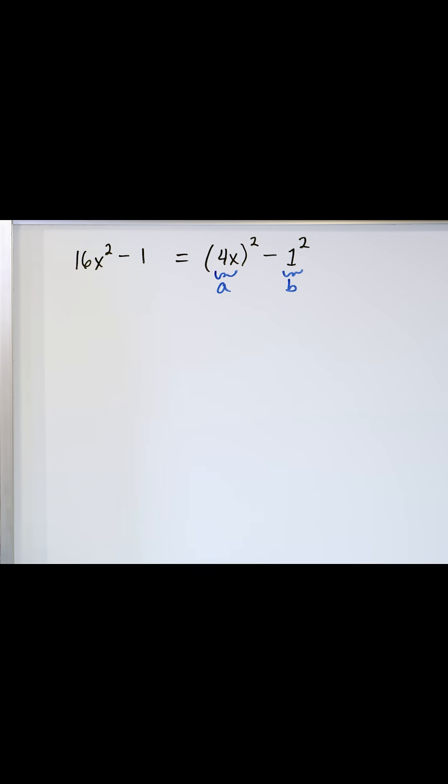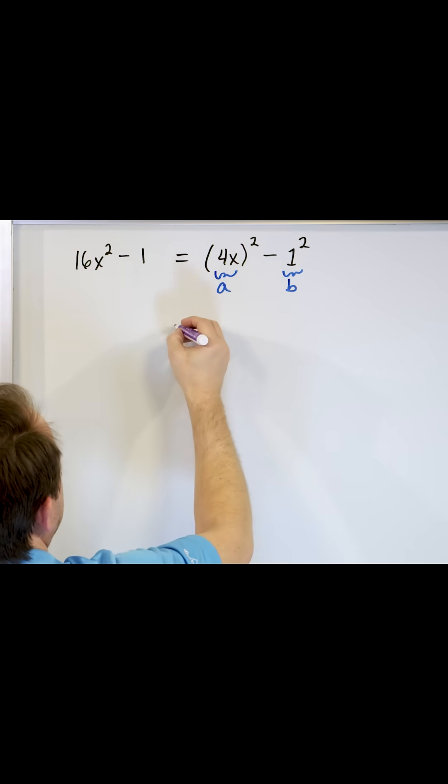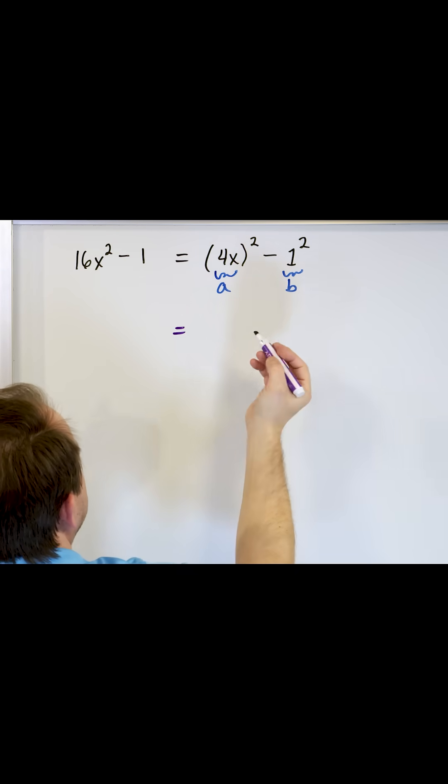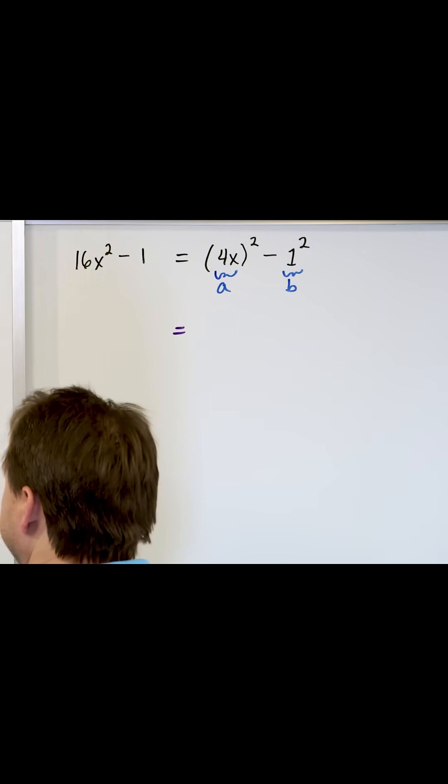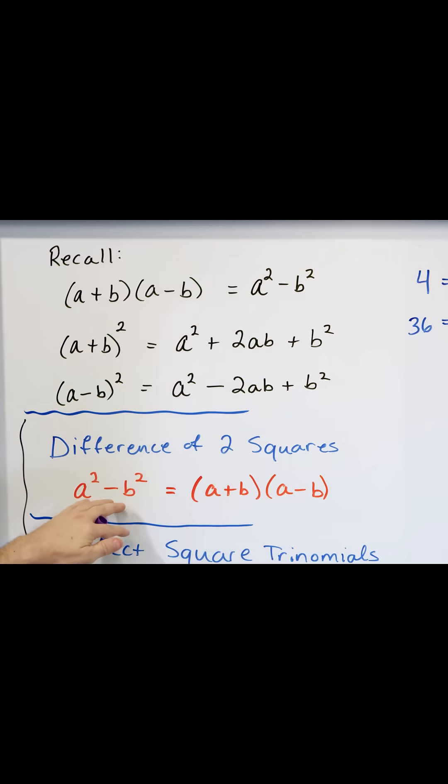So once you've identified that it is the difference of two squares, and you know that it's a squared minus b squared, then all you have to do is write, what's the rule? When you identify it's the difference of two squares, it's just going to be a plus b times a minus b.